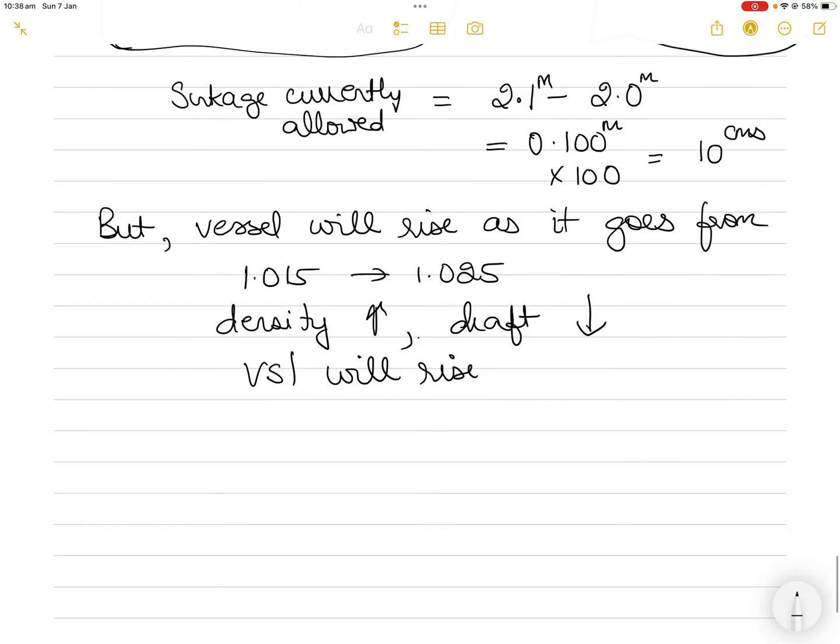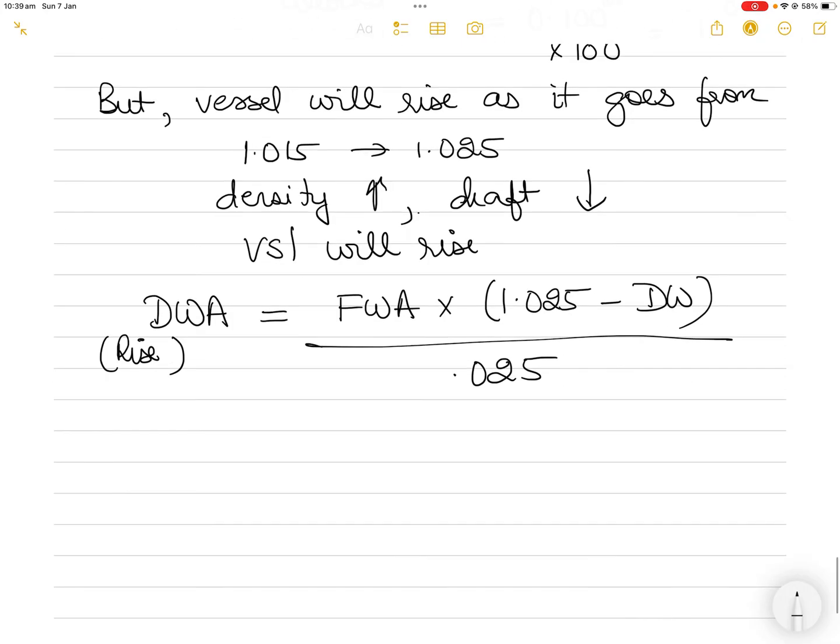How much is this rise going to be? Dock water allowance is the rise of the vessel, which equals freshwater allowance multiplied by (1.025 minus dock water density) divided by 0.025. Here, freshwater allowance is 200 millimeters, dock water density is 1.015, so that's 200 × (1.025 - 1.015) / 0.025.